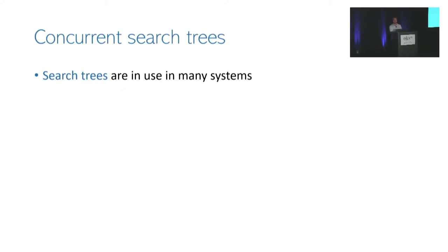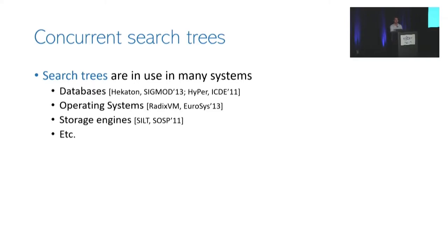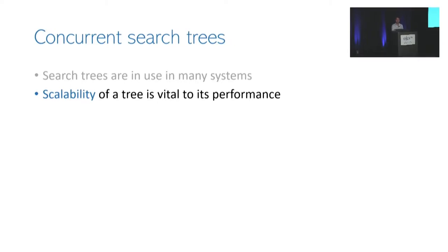So why are such transformations needed? Search trees are in use in many systems. They can be found in databases as indexes, in operating systems as key parts of the virtual memory subsystem, and in storage engines and so forth. This extensive use makes it clear that we would like these search trees to be as efficient as possible.